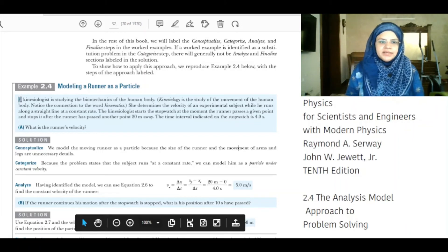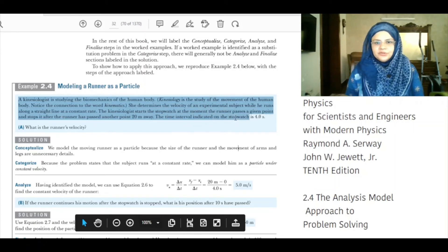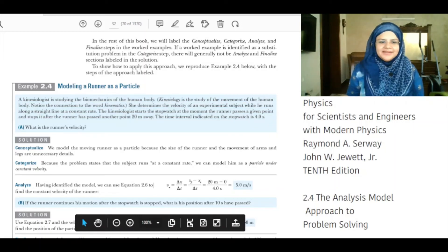A kinesiologist is studying the biometrics of the human body. Kinesiology is the study of the movement of the human body. Notice the connection to the word kinematics. She determines the velocity of the experimental subject while he runs along a straight line at a constant rate. The kinesiologist starts the stopwatch at the moment the runner passes a given point and stops it after the runner has passed another point 20 meters away. The time interval indicated on the stopwatch is 4 seconds. Part A: What is the runner's velocity?